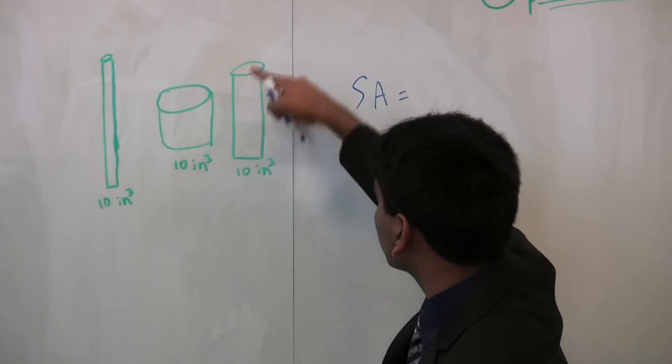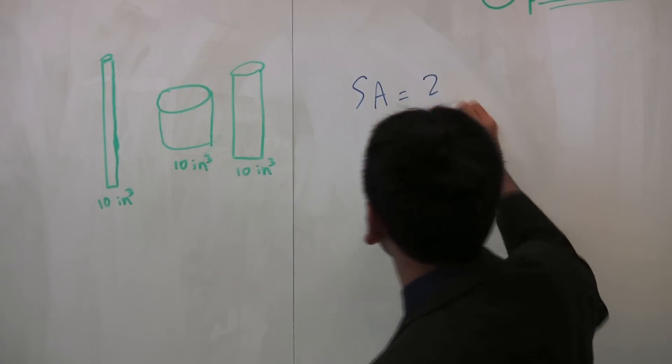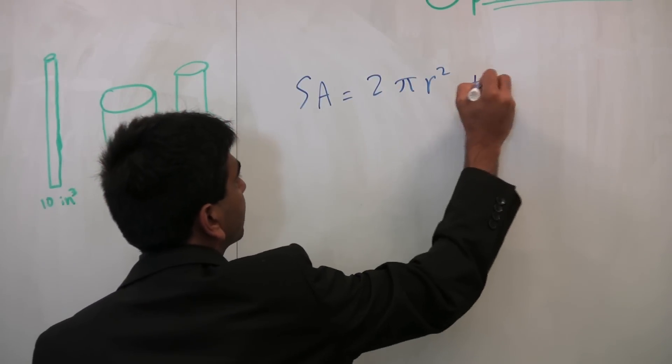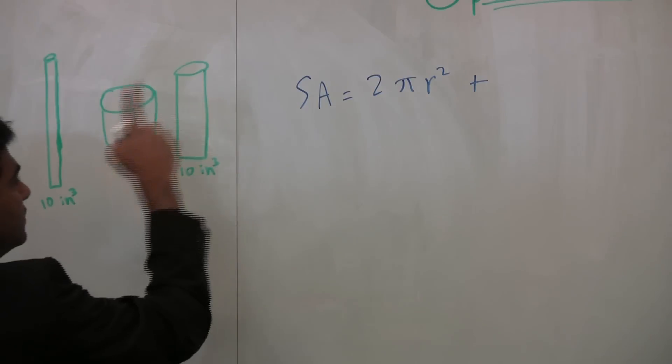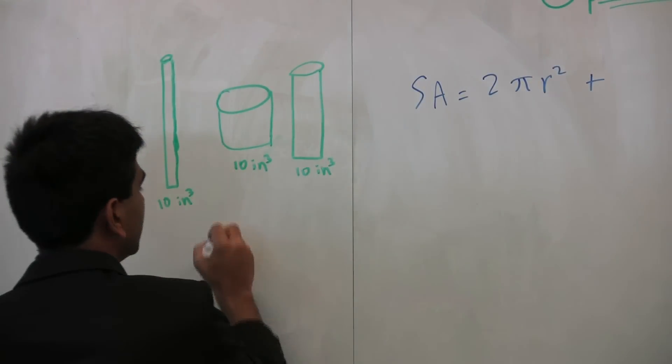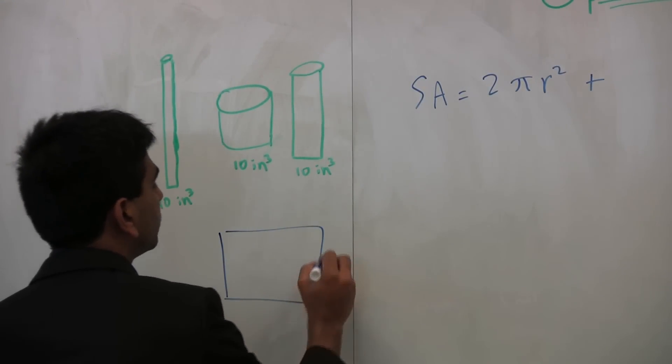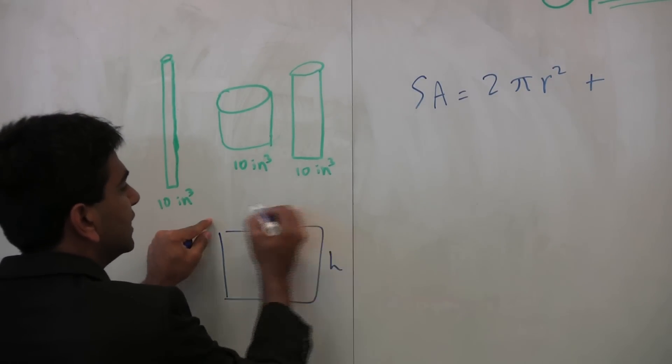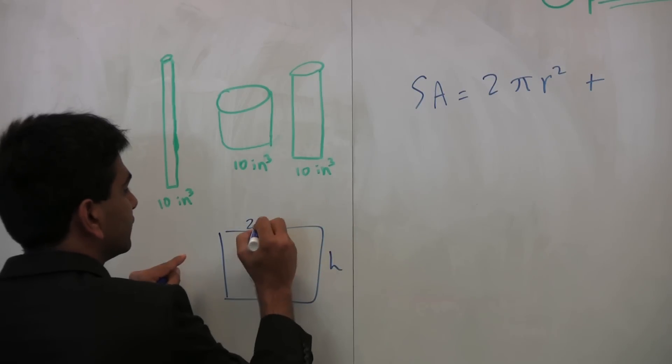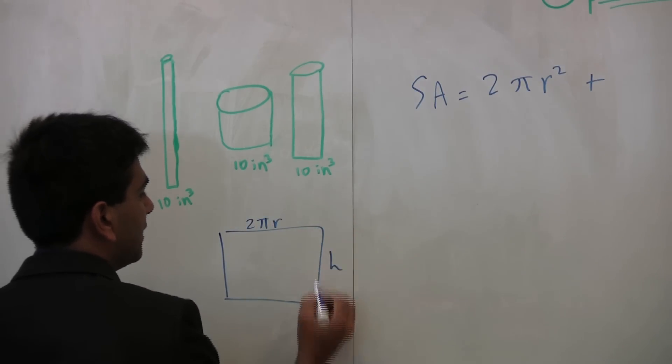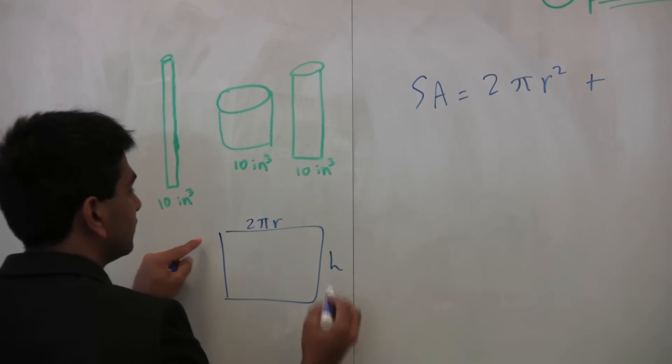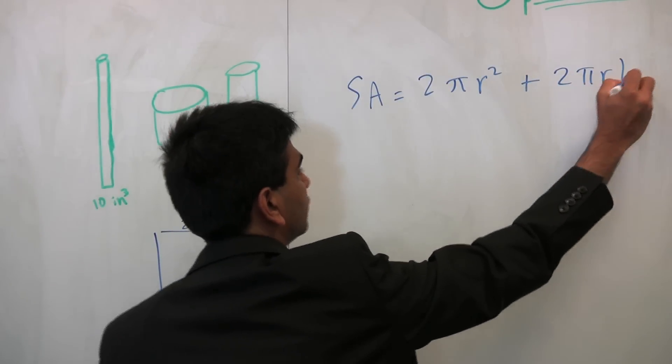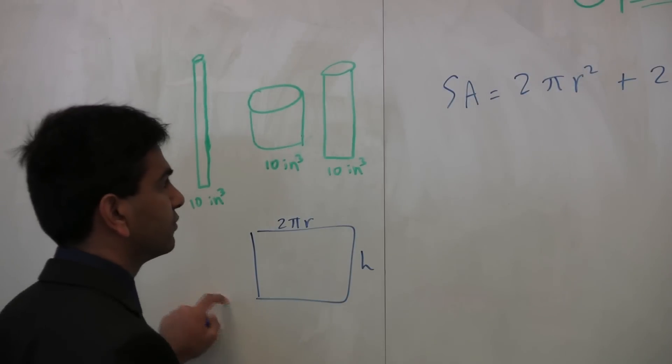Well, you have two circles, one on the top, one on the bottom, so 2 times pi r squared. And then, plus, you have this sheet in the middle, which, if you think about it, you can pull it out into a rectangle where this was the circumference of the circle, so this is 2 pi r and this is h. So, the surface area here is actually 2 pi r h, if you just use length times width for rectangles.